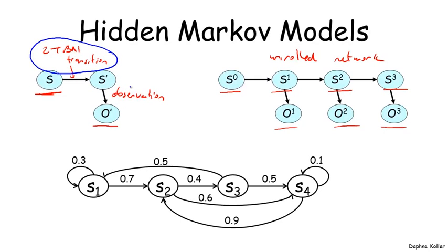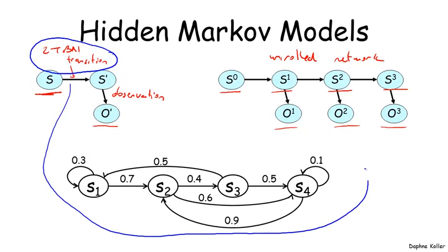Here is an example of what a structured transition model would look like, and this entire model is actually peering into the CPD of the probability of the next state given the current state. Each of these nodes in here is not a random variable, rather it is a particular assignment to the state variable, or a state that the model might be in.